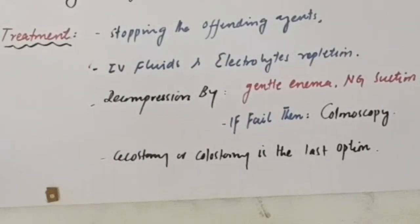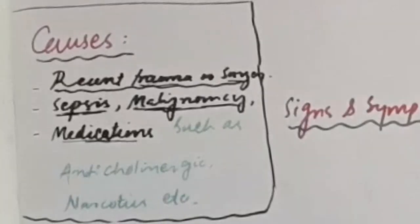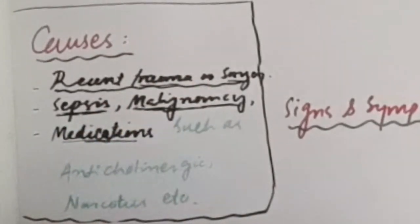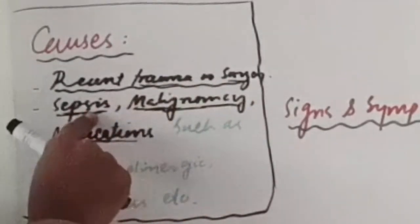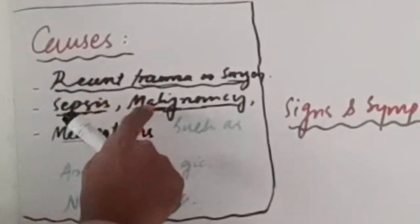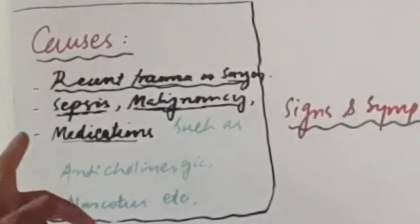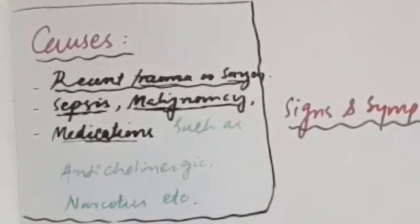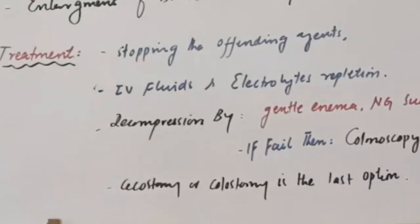Treatment of Ogilvie syndrome begins by stopping or addressing the causative agent. If the cause is trauma, treat the trauma. If it is sepsis, treat the infection. If it is malignancy, treat the malignancy. If it is medication, stop the medication. The patient should also be kept NPO — nothing by mouth.